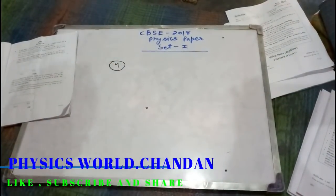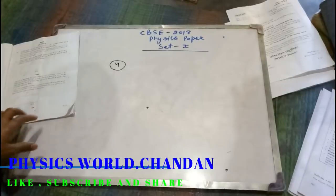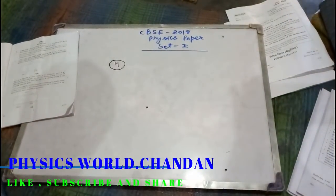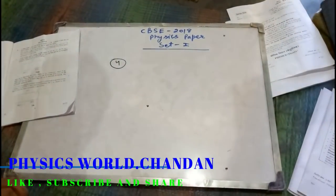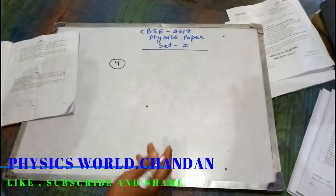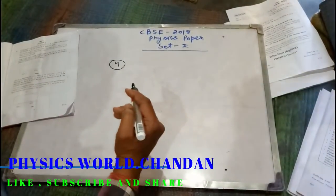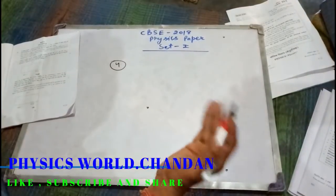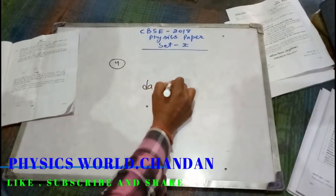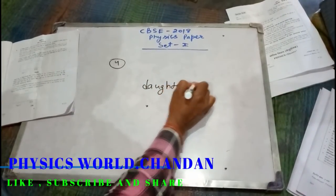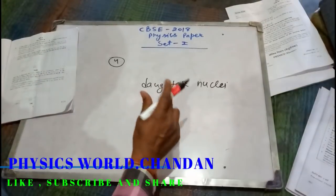Question number four: four nuclei of an element undergo fusion to form a heavier nucleus with release of energy. Which of the two — the parent or daughter nucleus — have higher binding energy? Friends, jaise hum jaante hain, yeh four nuclei jab aapas mein fuse hokar ek single nucleus ban rahe hain aur energy release kar rahe hain, to is basis par hum keh sakte hain ki the daughter nucleus will have the greater binding energy.